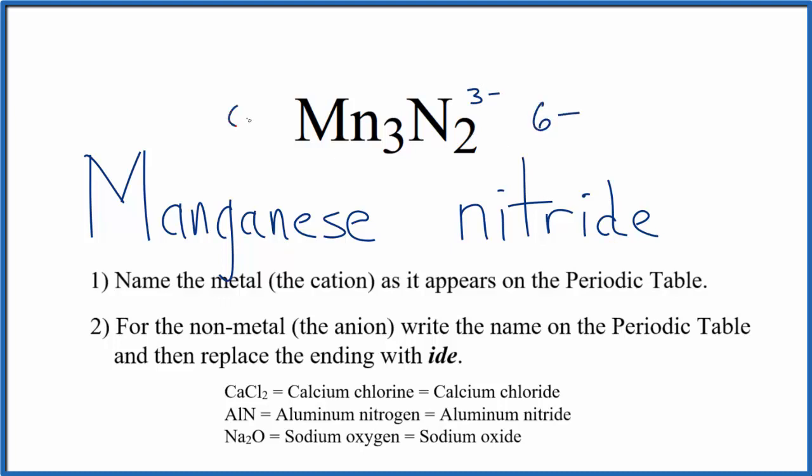So we need a 6 plus here with the manganese ions. 3 times 2 plus, that'll give us 6 plus, so these charges, they'll cancel out net charge of 0.